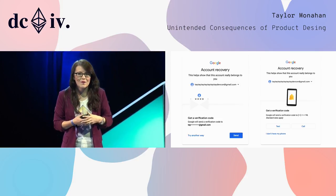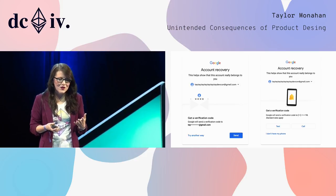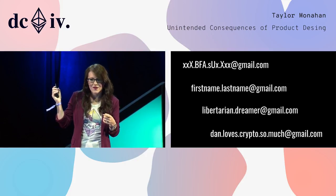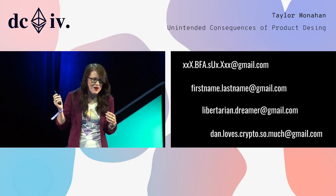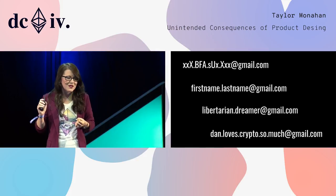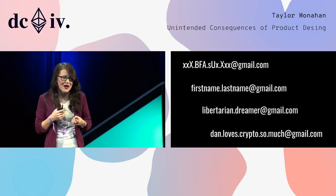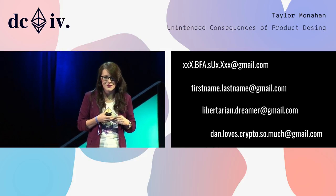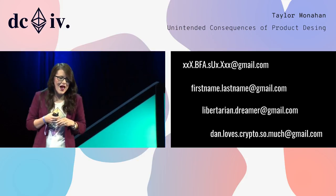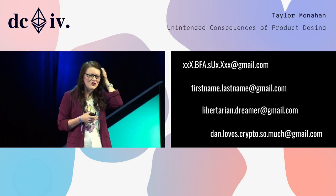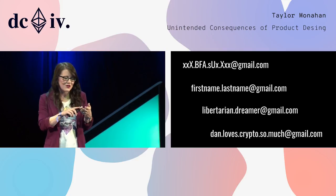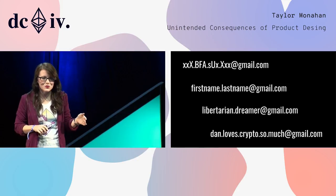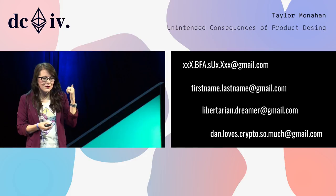The problem is that attackers and hackers can also recover your accounts. You might have a super-secure email — danlovescryptosomuch@gmail.com — with 2FA on it. But it uses your recovery email from a couple years ago, your 'libertarian dreamer' email, which is recovered from your old professional email, which is recovered from your old gamer tag from high school. Even though you've secured your main email and have 2FA, your Coinbase, Gemini, and every exchange account linked to it is only as safe as your old gamer tag from 2006.